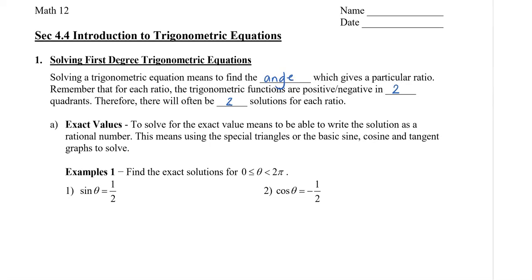We're going to look at exact values first. To solve for exact values means we need to write the solution as a rational number — not a decimal. This means we're going to use the special triangles or the basic sine, cosine, and tangent graphs.